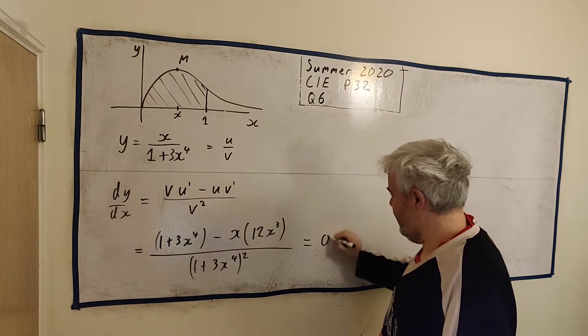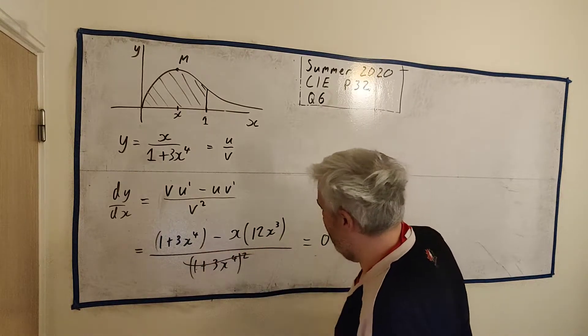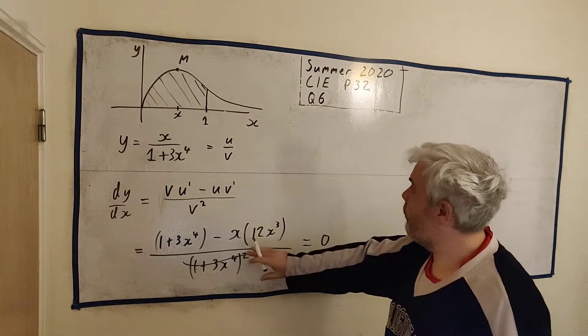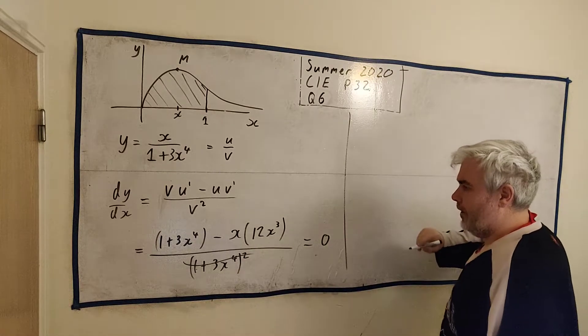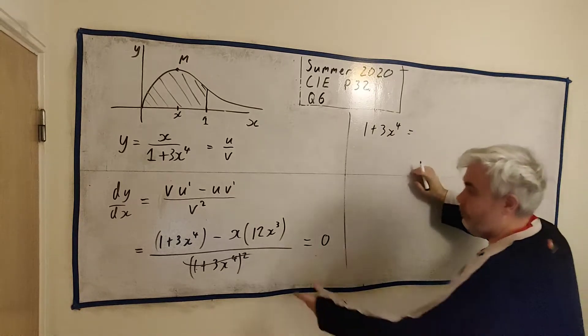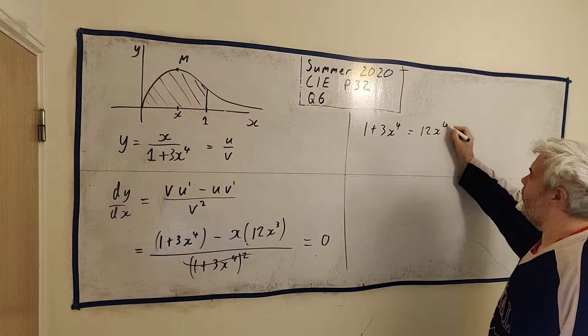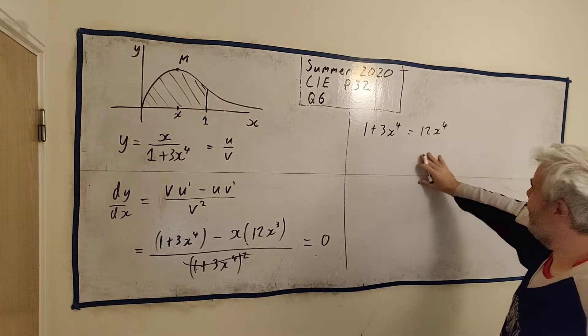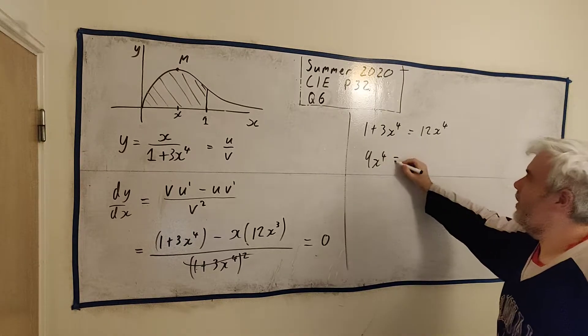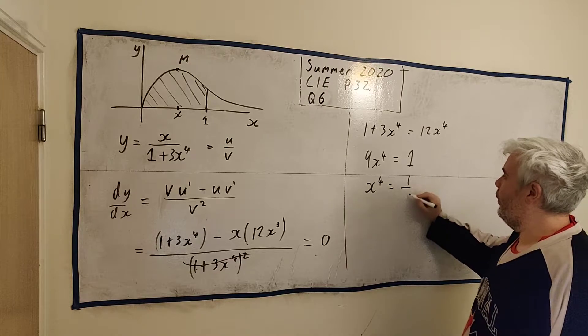This is all equal to 0, which is brilliant, because I can just multiply by the bottom row on both sides and it's gone. We're left with 1 plus 3x to the power of 4 is equal to 12x to the power of 4. Let's get the x to the powers of 4 on the same side. 12 minus 3 is 9, so 9x to the power of 4 is equal to 1. x to the power of 4 is equal to 1 over 9.